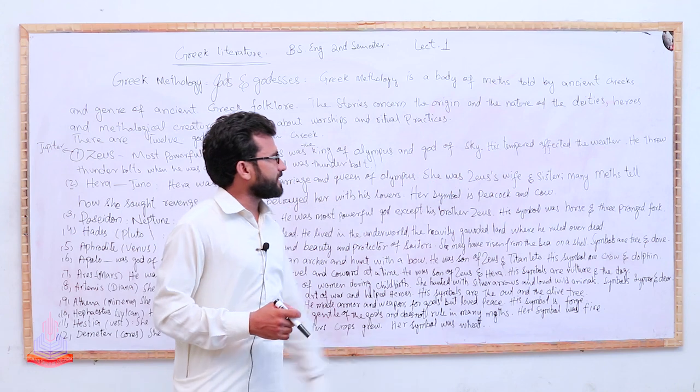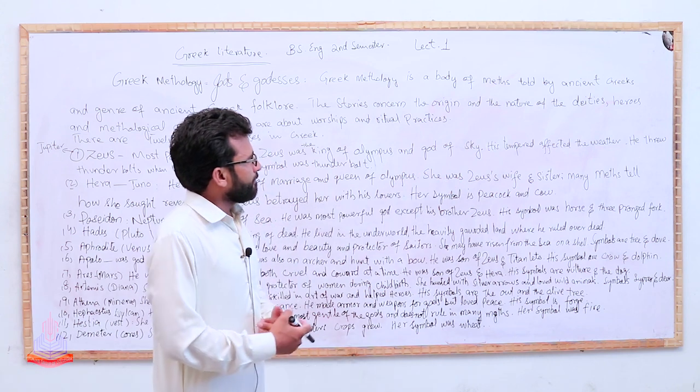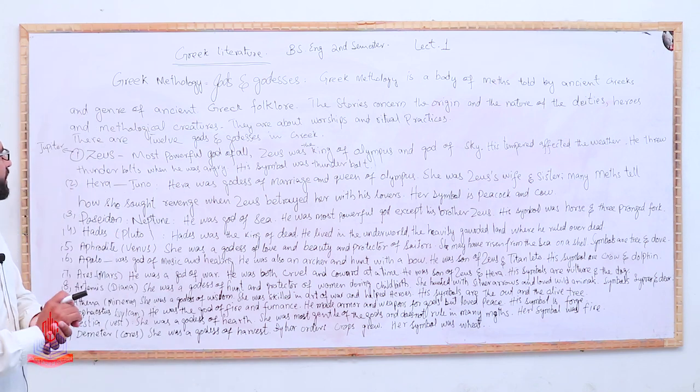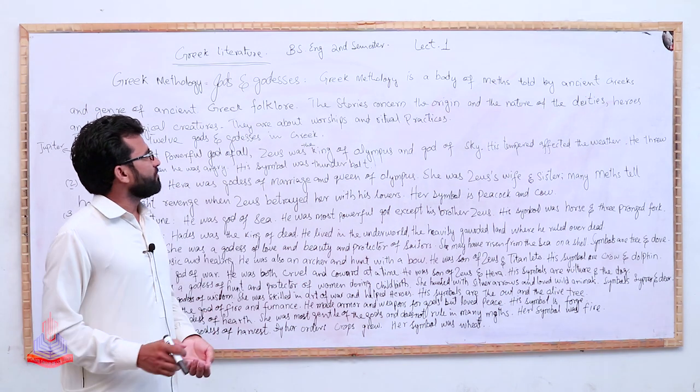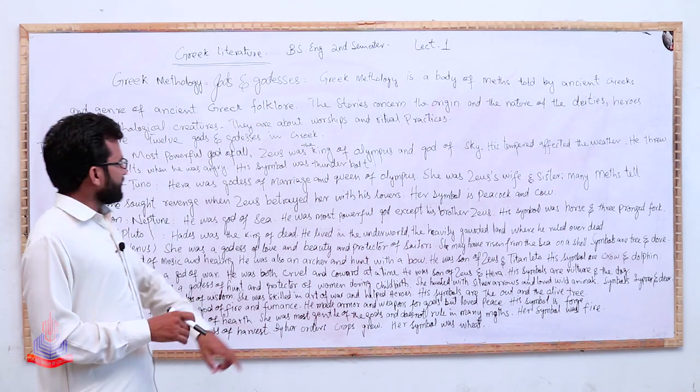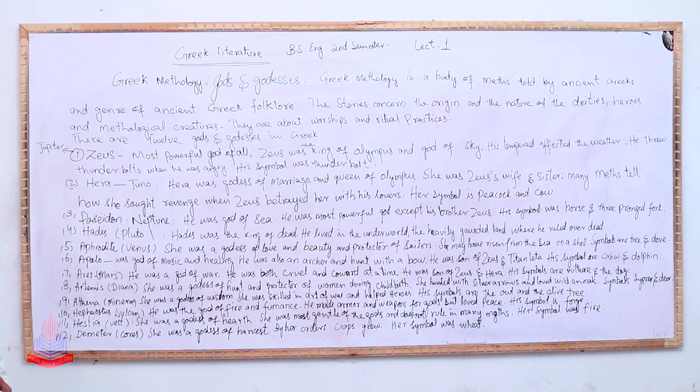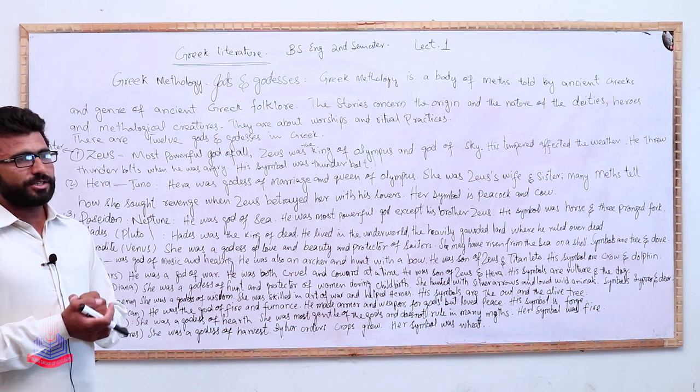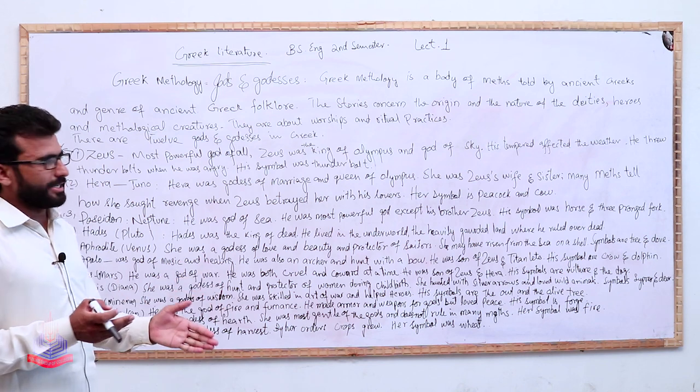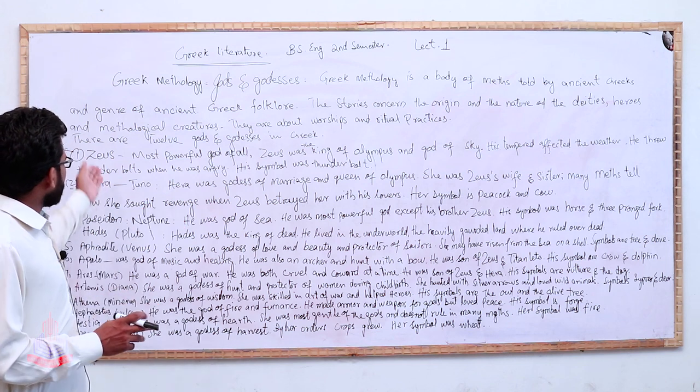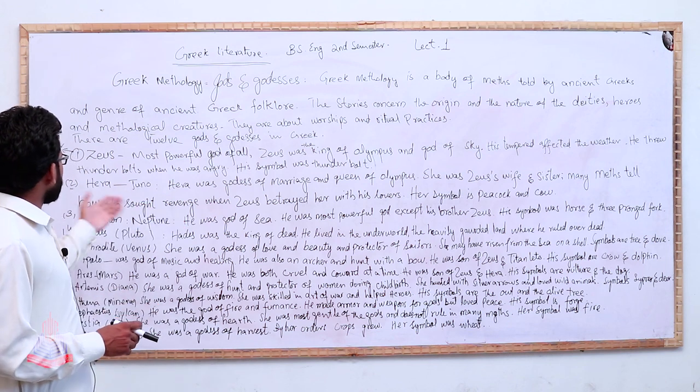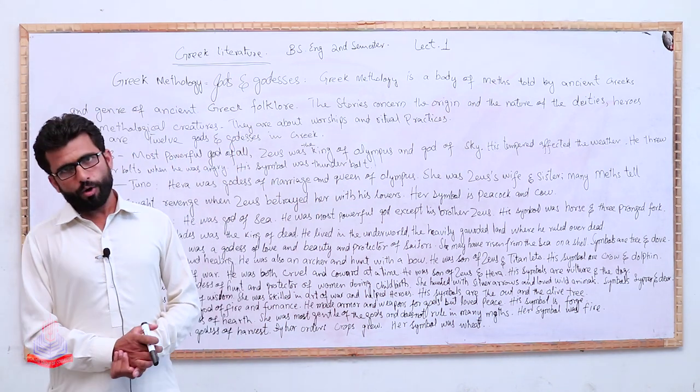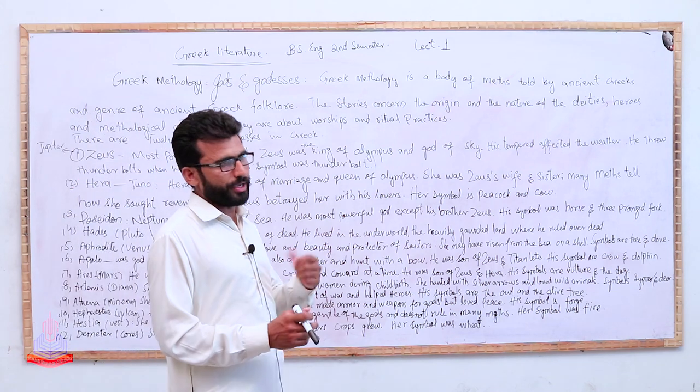She was Zeus's wife and sister. This is a wondering situation that at the same time she was Zeus's wife and sister also. Many myths tell how she sought revenge when Zeus betrayed her with his lovers. When Zeus betrayed her wife Hera and loved so many other goddesses, she sought revenge. Her symbol is peacock and cow.